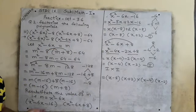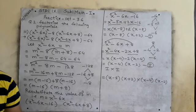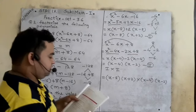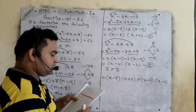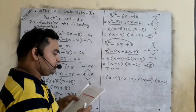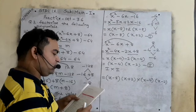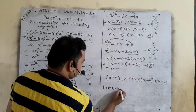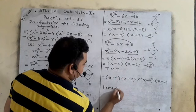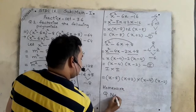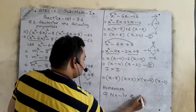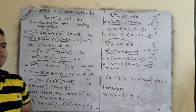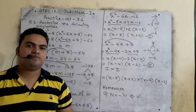I hope you understood all three sums. There will be some homework: question number 4 and question number 6 are very easy. You can solve them by yourself by considering a like variable. Thank you so much and best of luck.